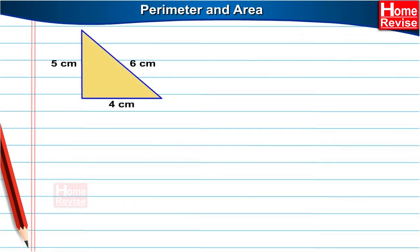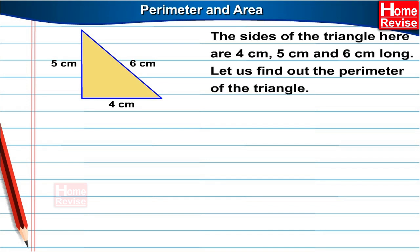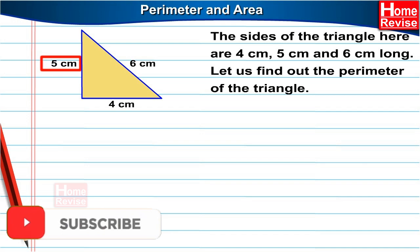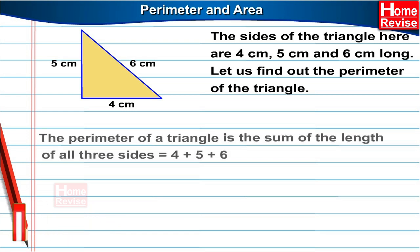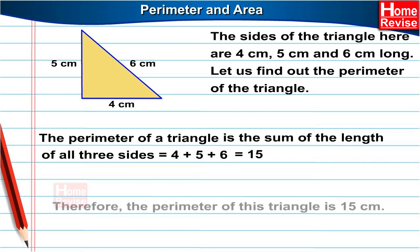This is a triangle. The sides of the triangle are four centimetres, five centimetres and six centimetres long. Let us find out the perimeter of the triangle. The perimeter of a triangle is the sum of the length of all three of its sides. So it is four plus five plus six, which is equal to fifteen. Therefore, the perimeter of this triangle is fifteen centimetres.